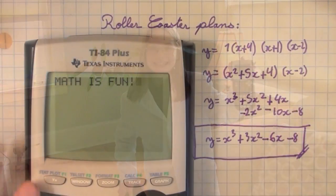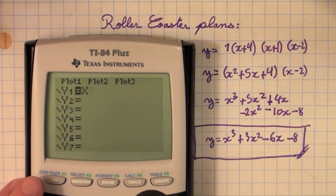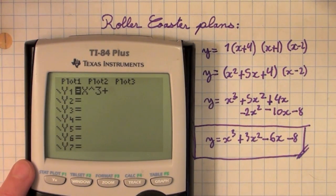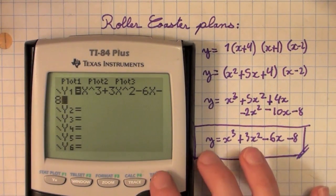Let me graph that on my trusty TI-84 plus Texas Instruments graphic display calculator. Let's see. Y equals X to the third plus 3X to the second minus 6X minus 8. Let's see how that looks graphed.